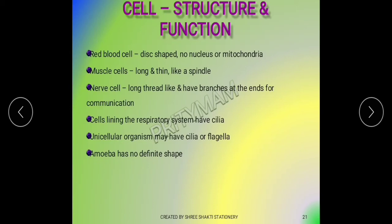Red blood cells are disc-shaped and they have no nucleus or mitochondria, to maximize the space available to transport oxygen. Muscle cells are long, thin, and spindle-shaped so that they can elongate and contract on their own.